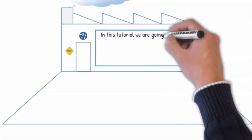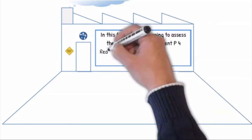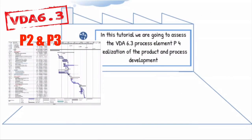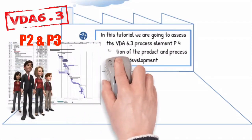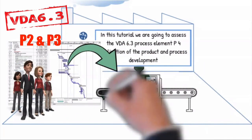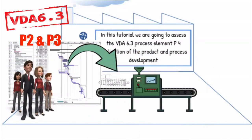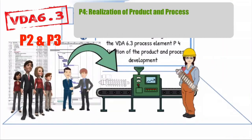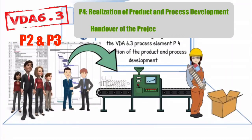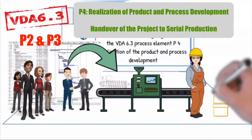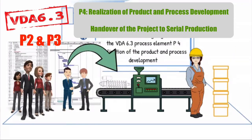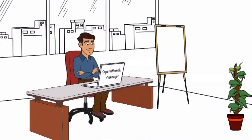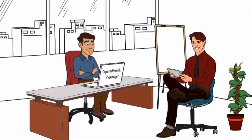In this tutorial we are going to assess the VDA 6.3 process element P4: realization of the product and process development. In P2 and P3 the organization had to implement a robust project management process with the necessary capable resources to plan the implementation of the product and process development in coordination with the customer. In process element P4 we are going to assess how effectively the product and process development actions were implemented to ensure that resources will be capable to meet the customer milestones in accordance with process element P3. We are now going to ask the operational manager how the production processes were installed and released according to the product and process development plan.